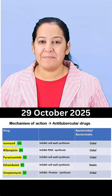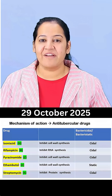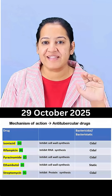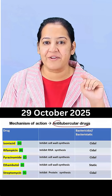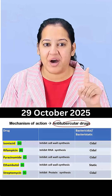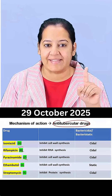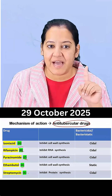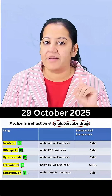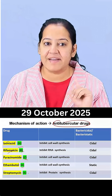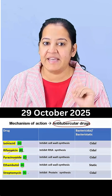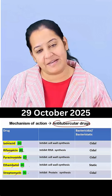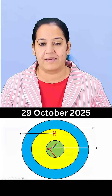Hello everyone. Here I am telling you the mechanism of action of 5 first-line anti-tubercular drugs, that is HRZES. H is isoniazid, R is rifampicin, Z is pyrazinamide, E is ethambutol, and S is streptomycin.